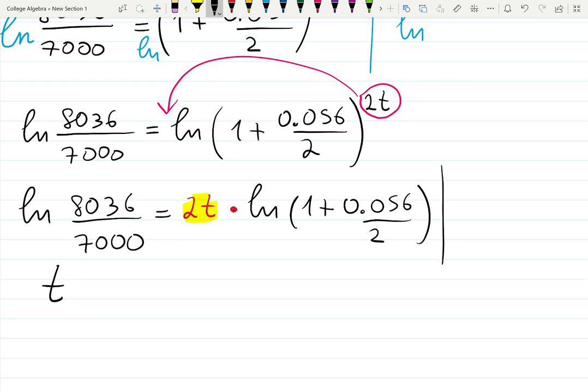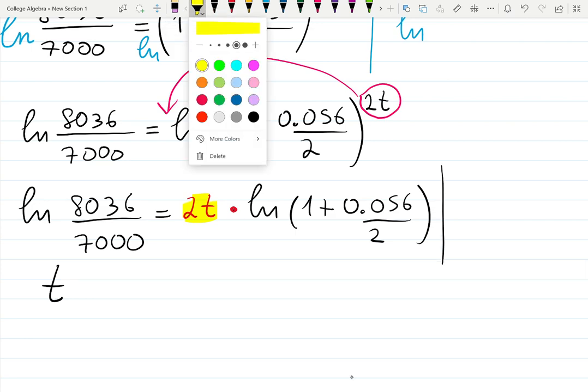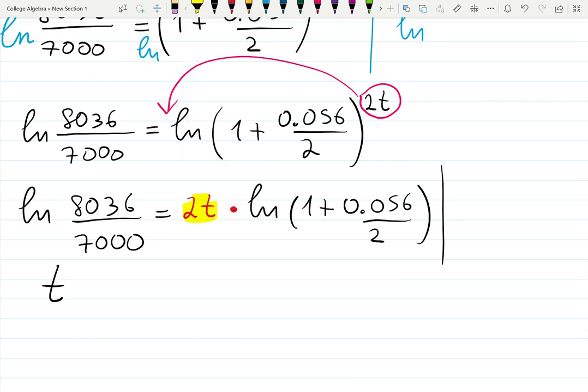I will divide by, let's do it this way, I will divide by everything which is not t on the right-hand side. So I will divide by 2 and I divide by this log. Then I will have t equals, make sense, t equals left-hand side is natural log...